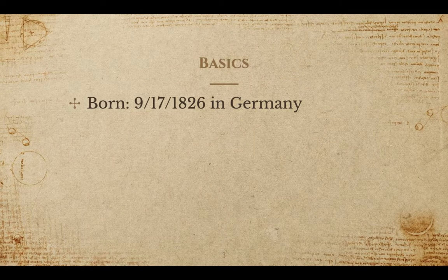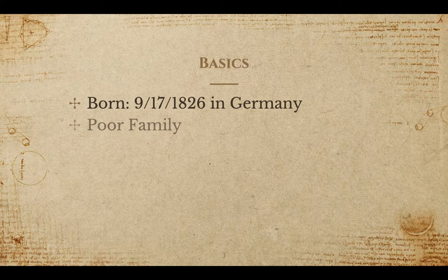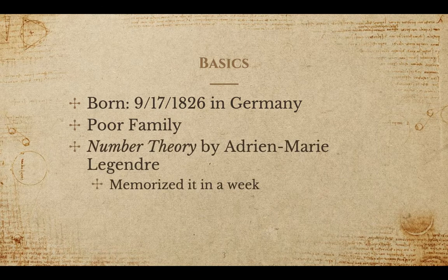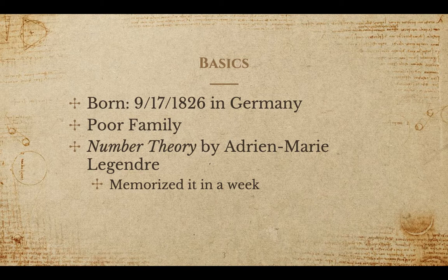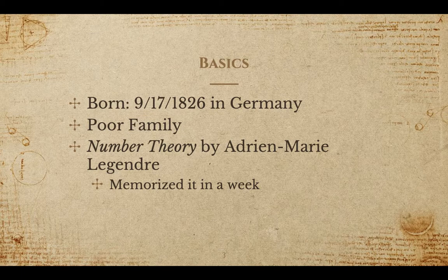Riemann was born in September of 1826 in Germany. He was born into a poor Lutheran pastor's family. As a young child, he showed an affinity for math, so his teacher lent him Number Theory. Riemann claims to have read and memorized the book in the span of a week.